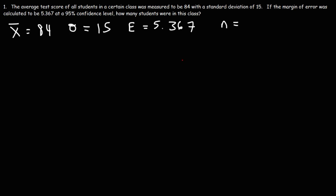So how can we do this? Well it helps to know the formula for the margin of error. The margin of error is equal to the z-score times the standard deviation divided by the square root of the sample size.